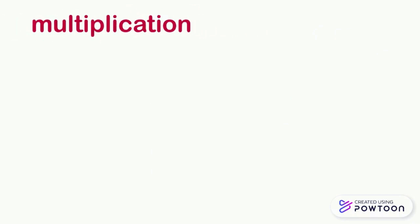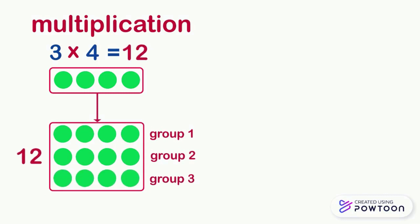So when we do a multiplication, we repeat the same number several times to find out the total number. 3 times 4 means that we have 3 groups of 4 pawns and we repeat the number 4 three times. 3 times 4 equals 12.